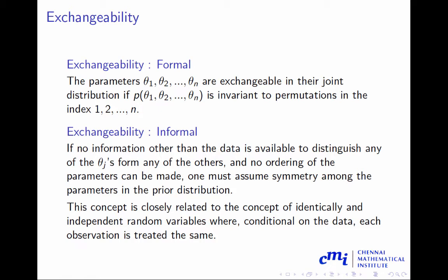The informal way of thinking is: if no information other than the data is available to distinguish any of the theta_j's from any others, and no ordering of the parameters can be made, one can assume symmetry among the parameters in the prior distribution. This concept is very close to the concept of identically distributed random variables, but it is not exactly identical distributed random variables—this is more defined in terms of joint distribution.